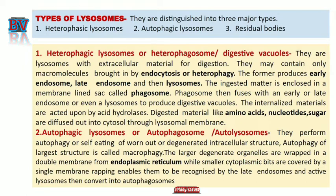After digestion, any useful substances or digested materials like amino acids, nucleotides, and sugars are diffused out into the cytosol through the lysosomal membrane.